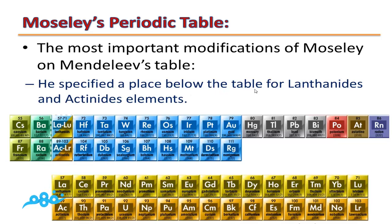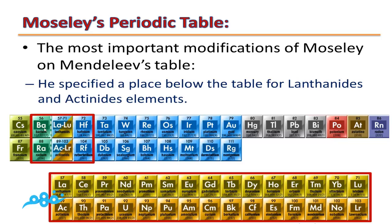Moseley specified a place below his table for lanthanides and actinides. There is a gap between Ba (atomic number 56) and Lu (71) - these elements from La 57 to Lu 71 are called lanthanides. Similarly, there is a gap between Ra 88 and Lr 103, filled by the actinides, which start from actinium Ac 89 and end with Lr 103.